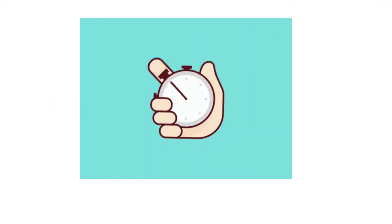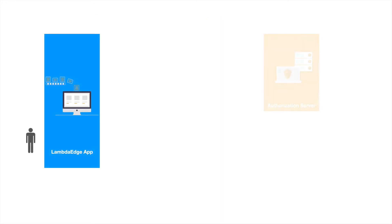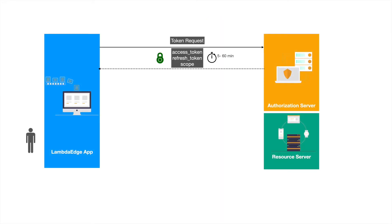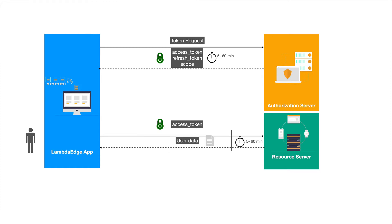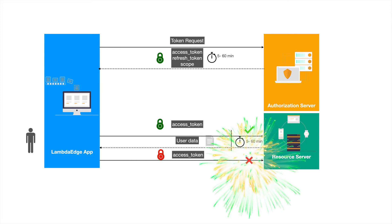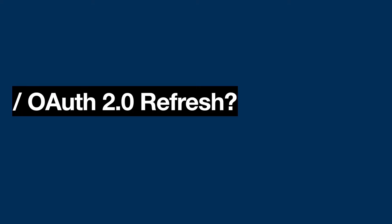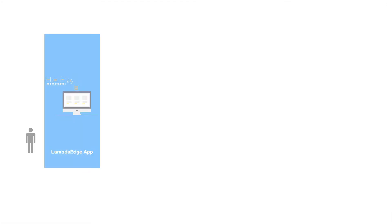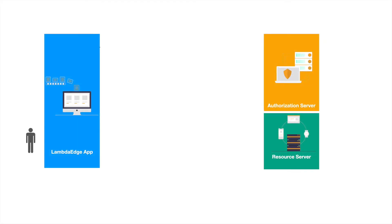Access tokens have an expiration time, typically 5 minutes to 60 minutes. Until the access token is expired, the application can access the resource server for data defined in the scope. Once the access token is expired, the API will return a 401 or 403 resource forbidden error. At that stage, the application has to get a new access token using the refresh token. The refresh token has a much longer expiration time and can be used to refresh the access token every so often.